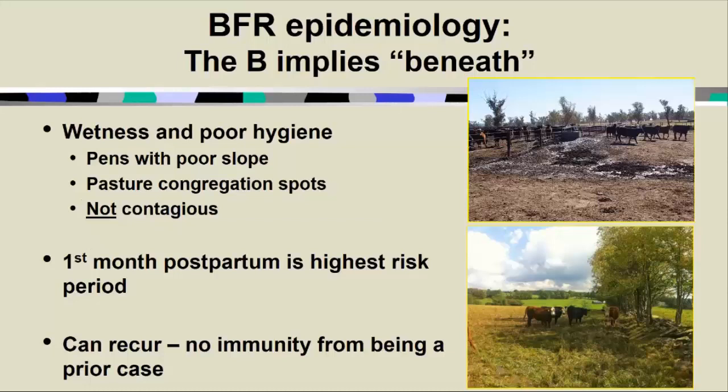It doesn't appear to be contagious. You can see outbreaks of it, and there's some evidence to suggest that a badly affected cow might spread it to others. But more often when we see outbreaks, what it is signaling is that a large number of cattle are being exposed to risk factors like muddy environments and poor environmental hygiene — it doesn't tend to spread through a population like wildfire. Interestingly, we see most cases in the first month postpartum. We think that's due to the stress of calving and lactation and the physiologic stress that puts on the animal's immune system. If a cow gets foot rot and you treat her and she recovers, she can get it again — there is no immunity from having a prior case of this disease.